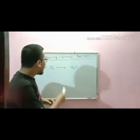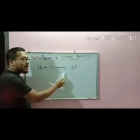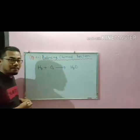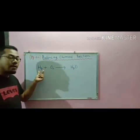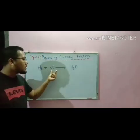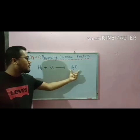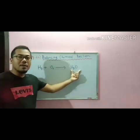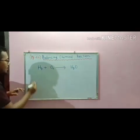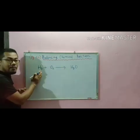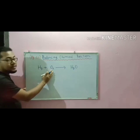As you can see, I have written a chemical equation over here. Mercury reacts with oxygen to form mercury oxide. Hg stands for mercury and O stands for oxygen.